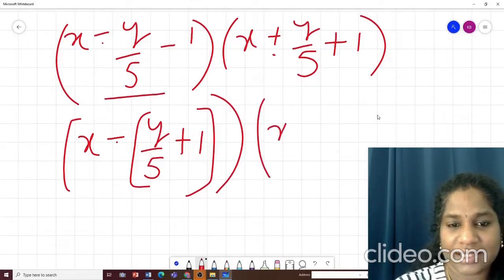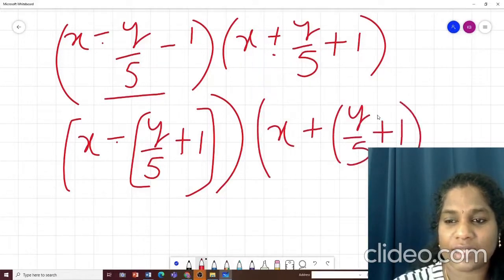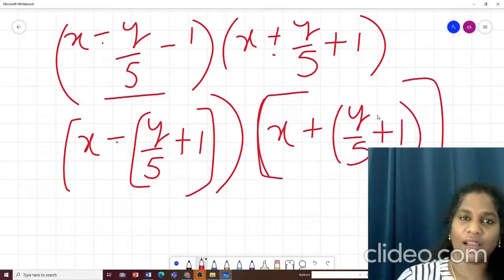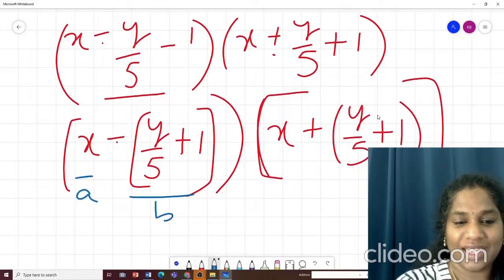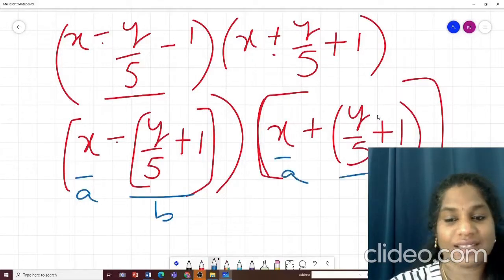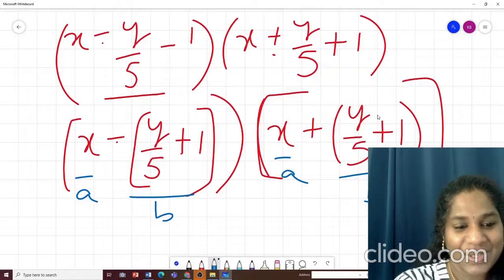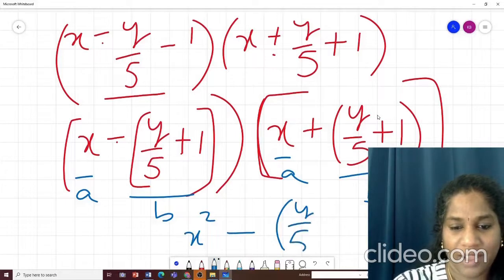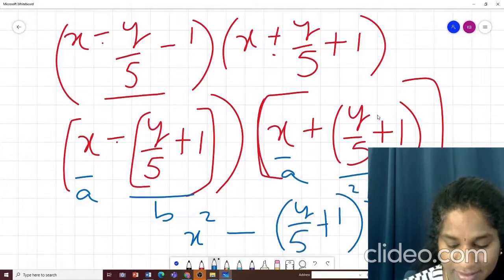And here x plus I will put them in bracket but when I put in bracket for plus no changes. Now what do you notice? Do you feel this is your a and this is your b. This is your a and this is your b. a minus b a plus b. Simple. So this will become a square minus what is your b square? y by 5 plus 1, b square. Did you get this?